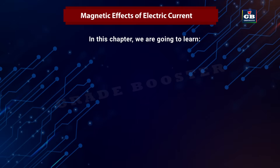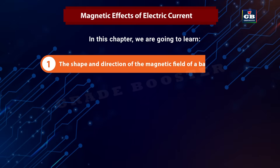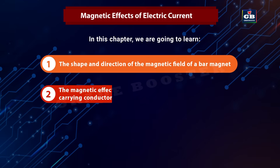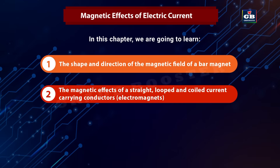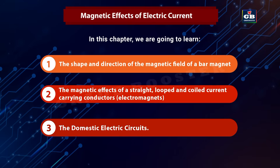In this chapter, we will learn about: 1. The shape and directions of the magnetic fields of a bar magnet. 2. The magnetic effects of straight, looped, and coiled current-carrying conductors. And 3. The domestic electric circuits.